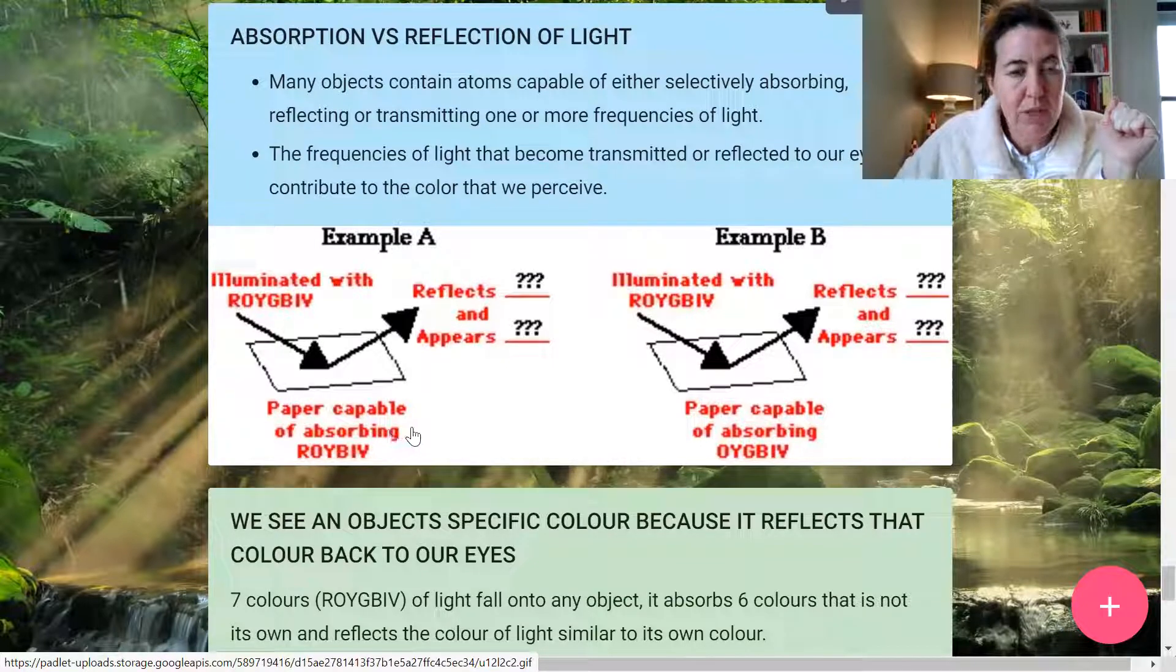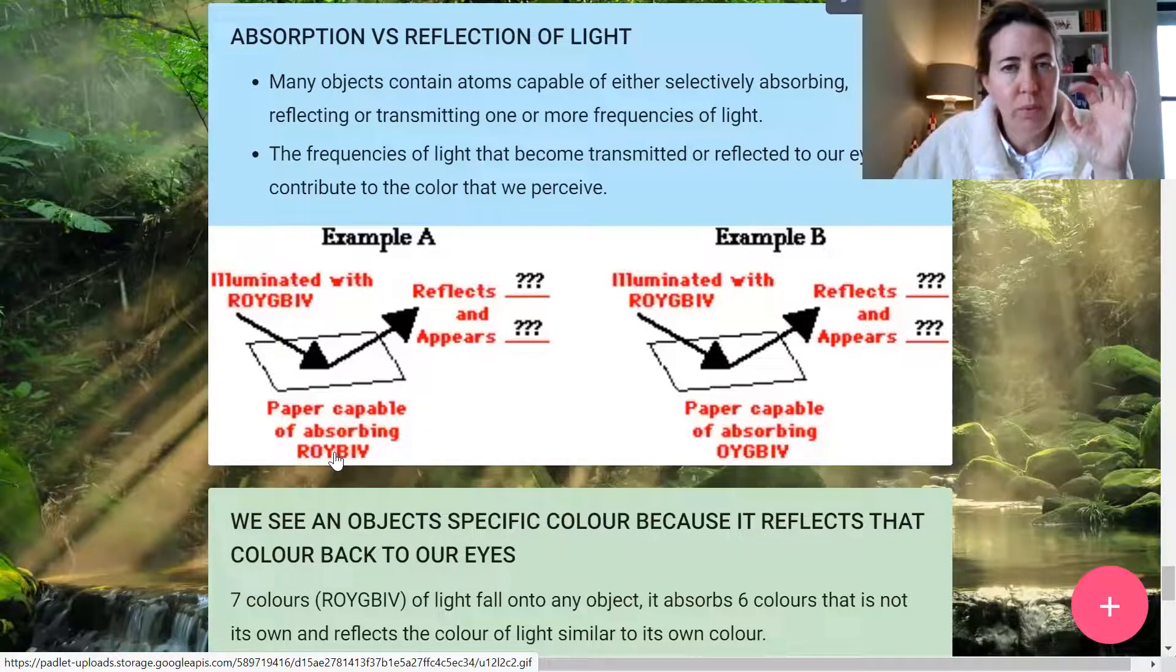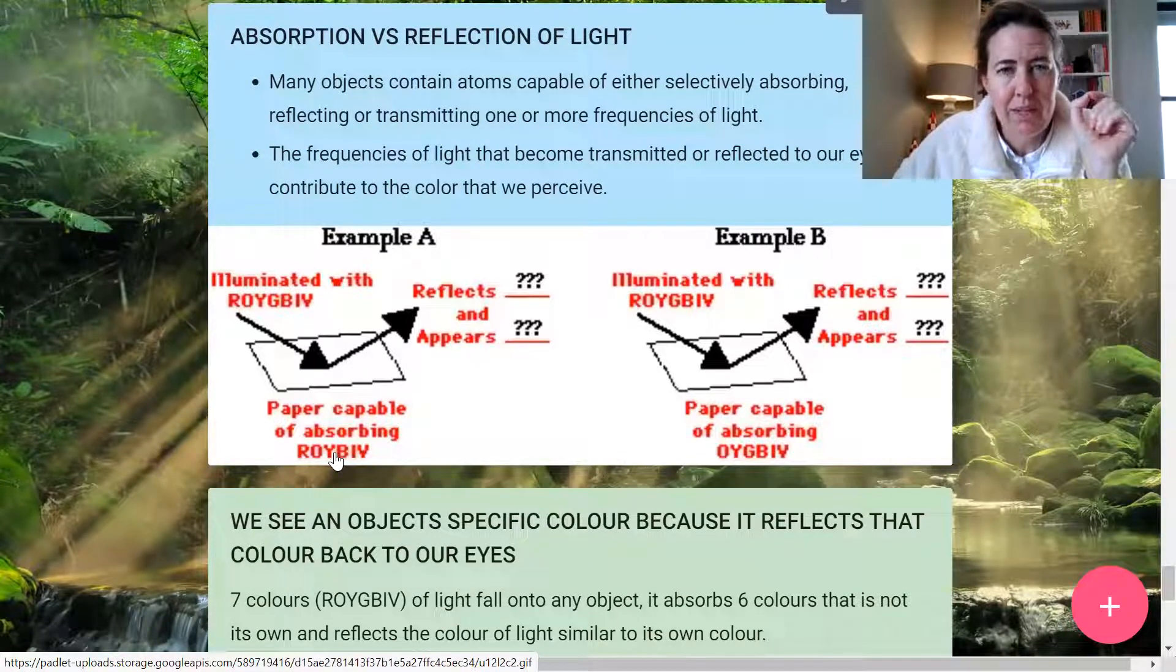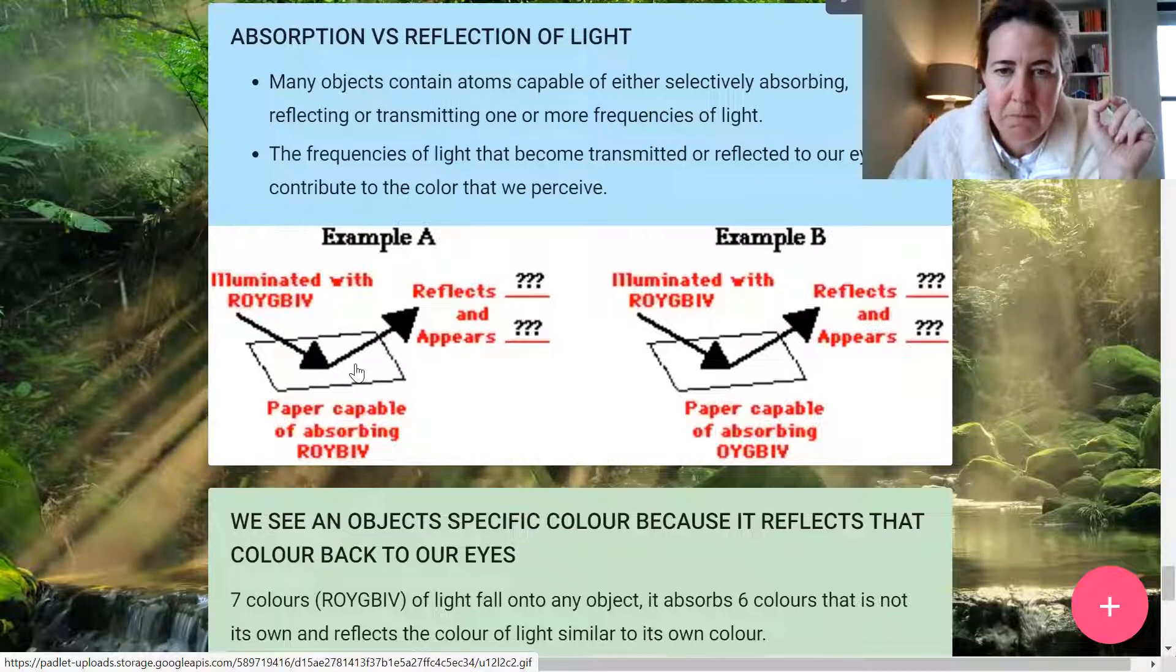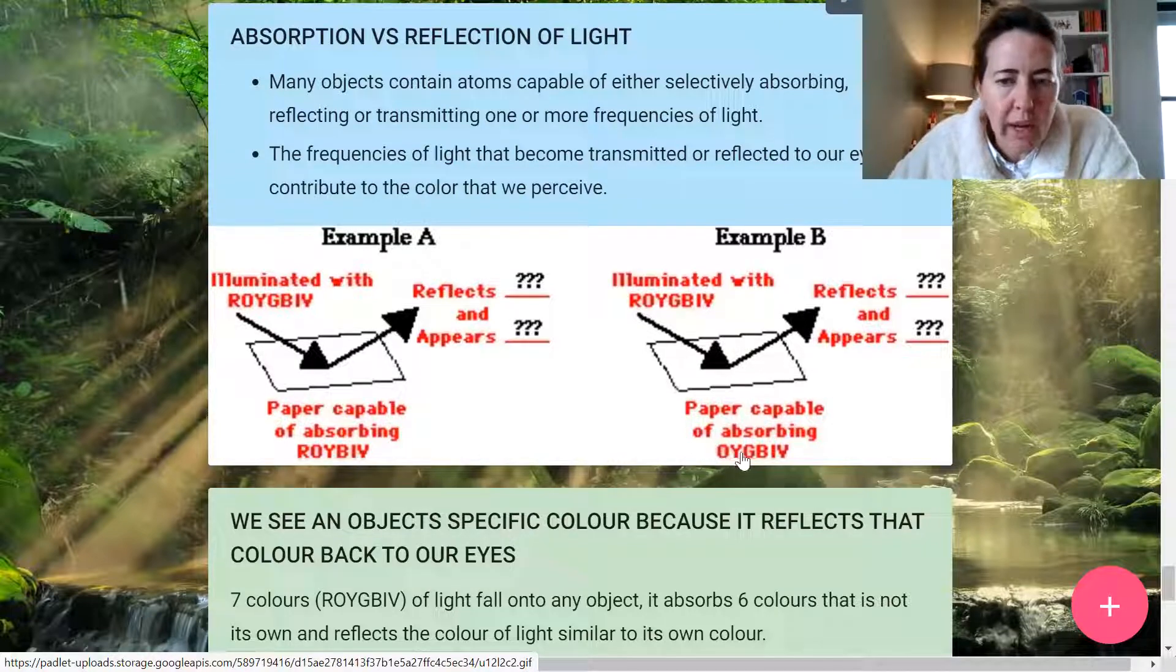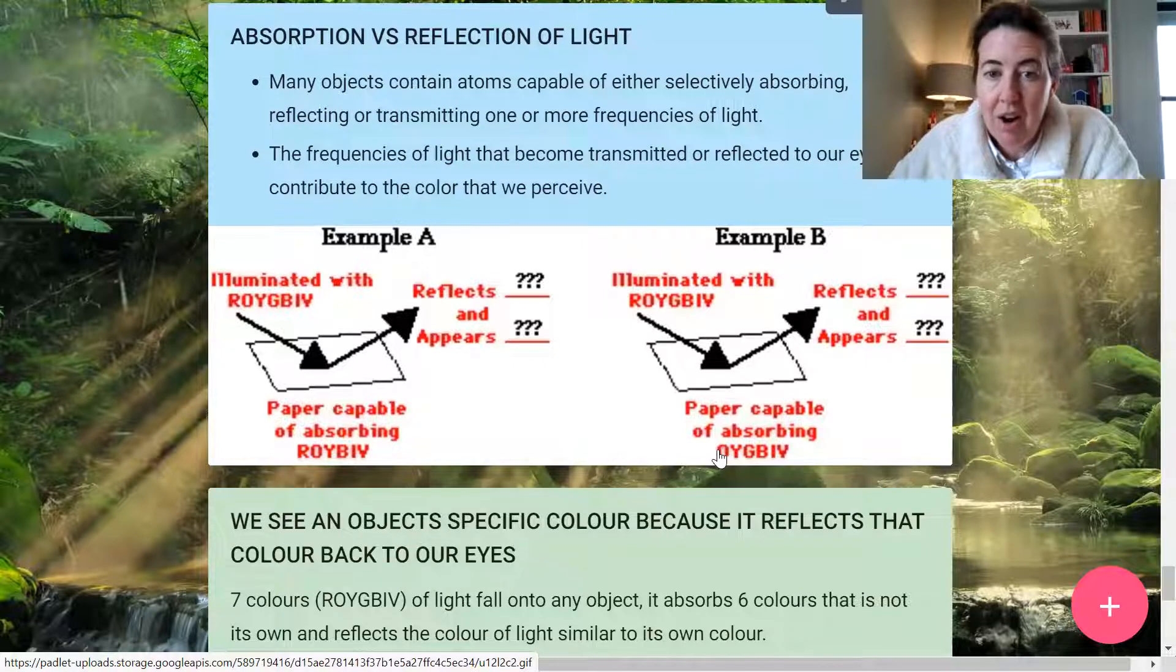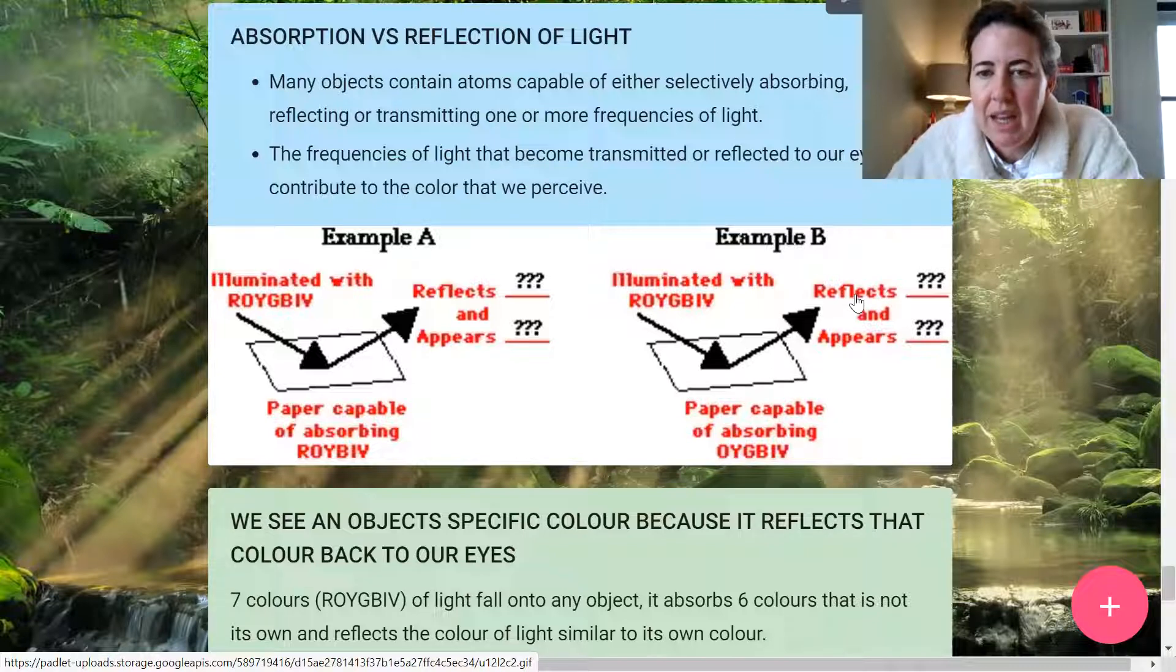This falls and hits the surface of this page. The paper is capable of absorbing Roy Biv. So it has absorbed all of the colors of white light except green. It then therefore reflects the green part of the spectrum and we see this object, this paper, to be green. Look at example B. It's illuminated with Roy G Biv, all the colors of white light. And now it falls onto the paper. The paper only absorbs Roy G Biv without R. R does not therefore get absorbed by this paper, but it gets reflected. R gets reflected. That means this object is red.